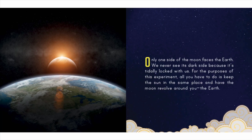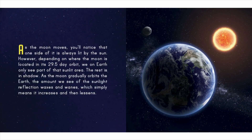For the purposes of this experiment, all you have to do is keep the sun in the same place and have the moon revolve around you, the earth. As the moon moves you'll notice that one side of it is always lit by the sun. However, depending on where the moon is located in its 29.5 day orbit, we on earth only see part of that sunlit area — the rest is in shadow. As the moon gradually orbits the earth, the amount we see of the sunlight reflection waxes and wanes, which simply means it increases and then lessens.